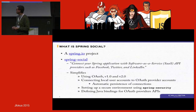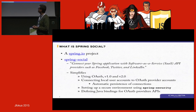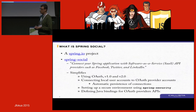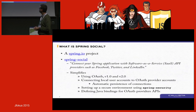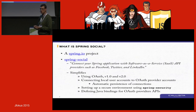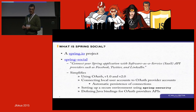Spring Social is a project within the Spring IO family. It can be used to connect your Spring application with software-as-a-service API providers such as Facebook, Twitter, and LinkedIn. It has four main capabilities: first, simplifying use of the OAuth protocol, both version one and version two; second, creating local user accounts and connecting them to social network accounts, with automated persistence to a database; third, integrating with Spring Security to set up a secure environment; and fourth, defining Java bindings for the APIs that network providers supply, so you don't have to make homegrown REST calls.